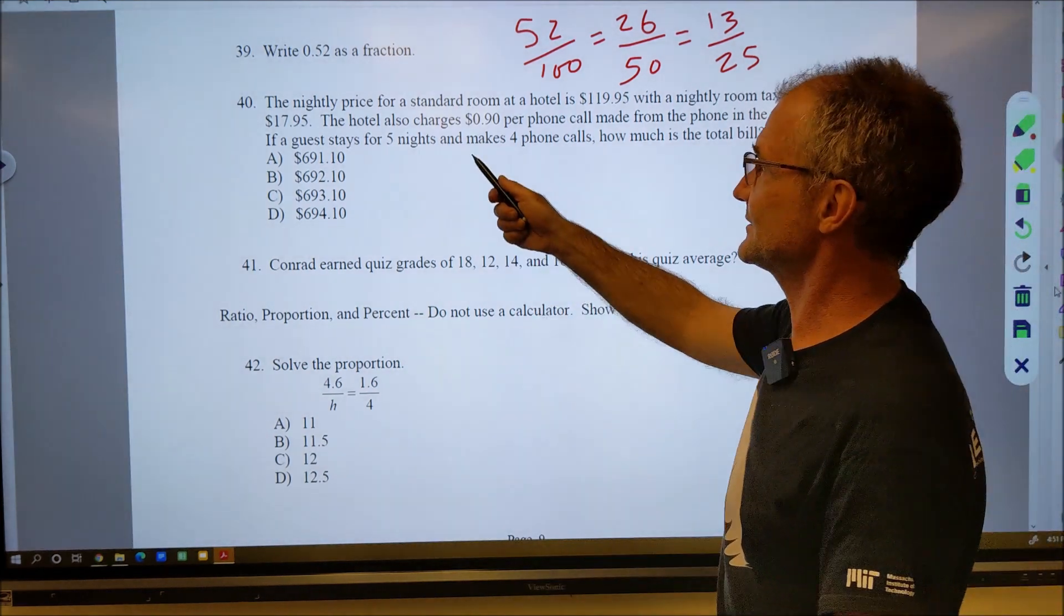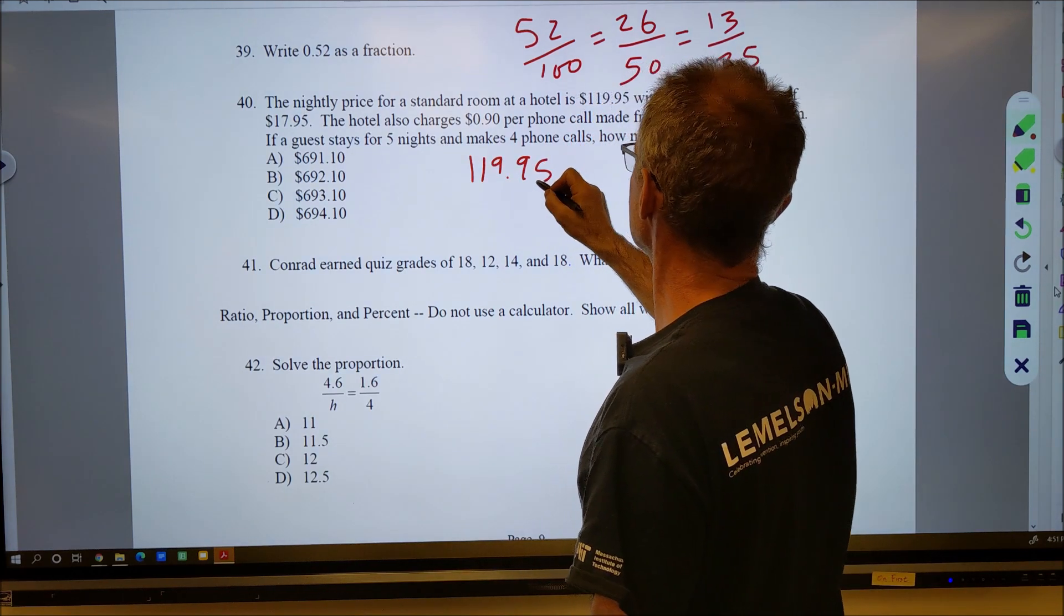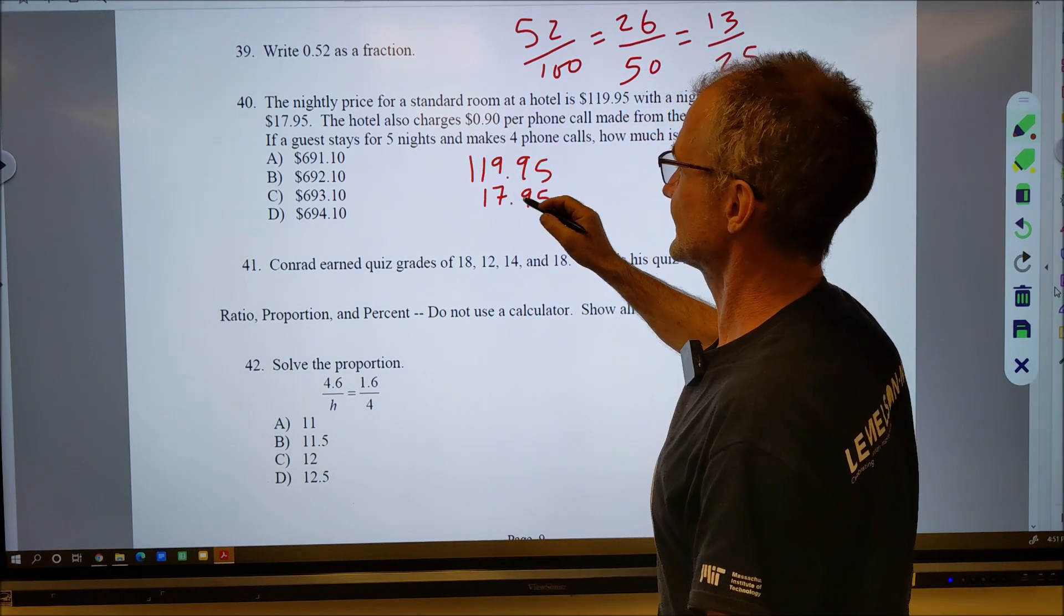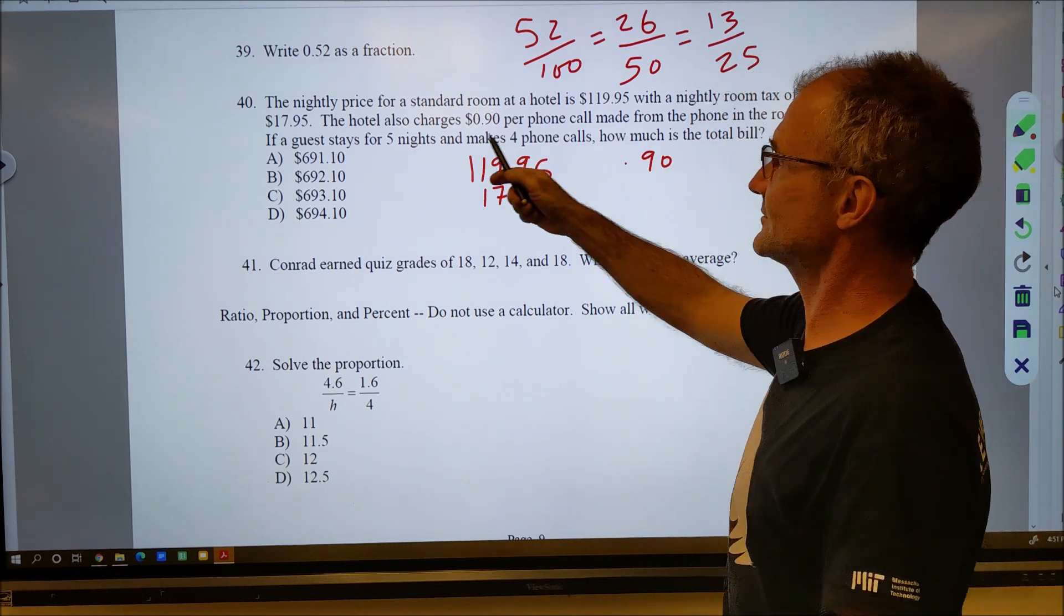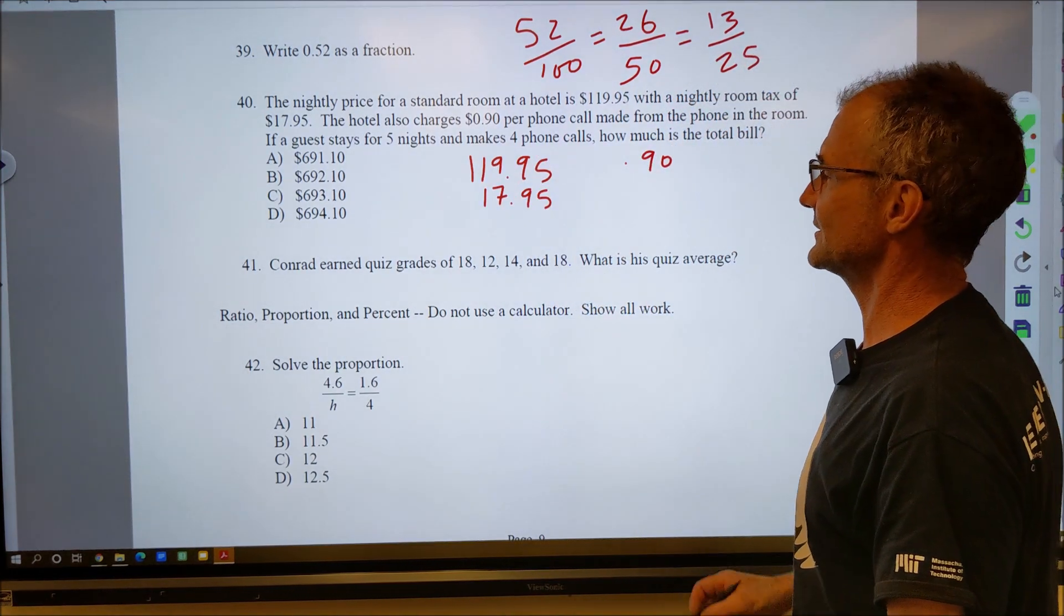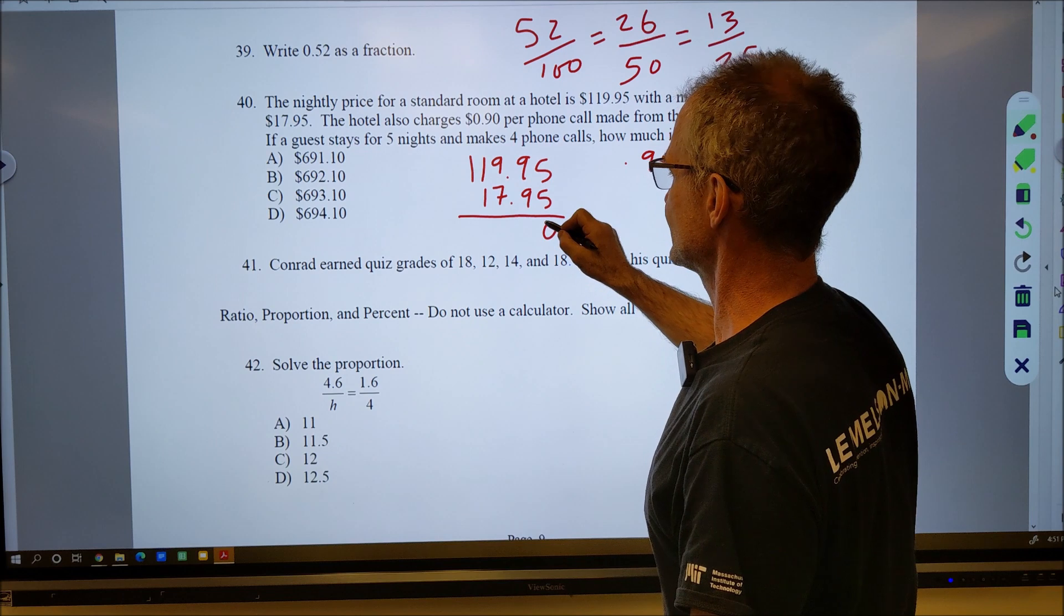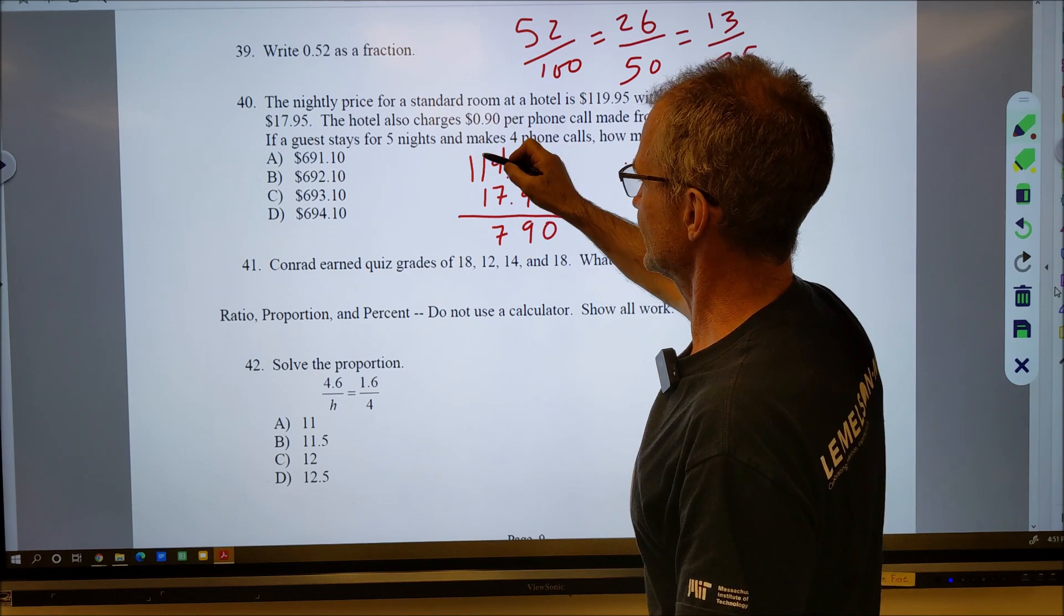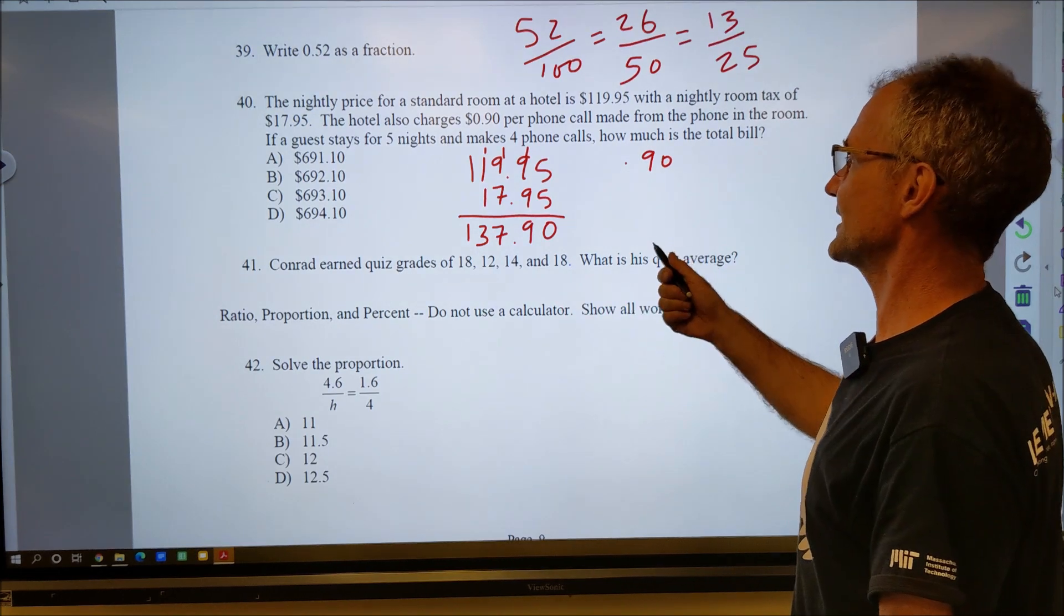Number 40. The nightly price for a standard room at a hotel is $119.95 with a nightly room tax of $17.95. The hotel charges 90 cents per phone call made from the phone in the room. If a guest stays five nights and makes four phone calls, how much is the total bill? I'm going to add this together right here to get the cost per night. 5 and 5 is zero or 10, carry the one, 18, 19, carry the one, 17, carry the one, 3.